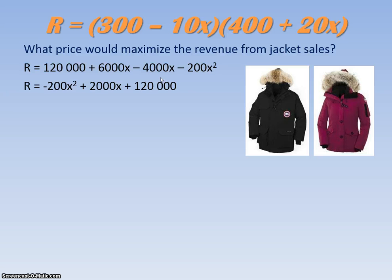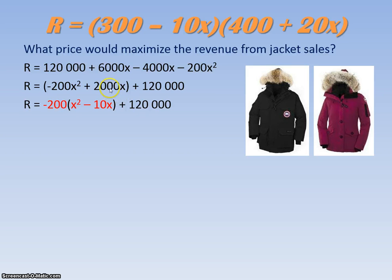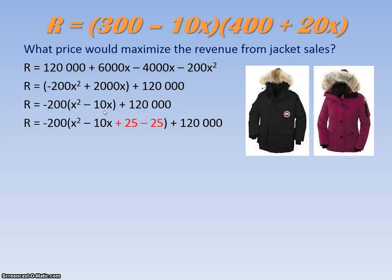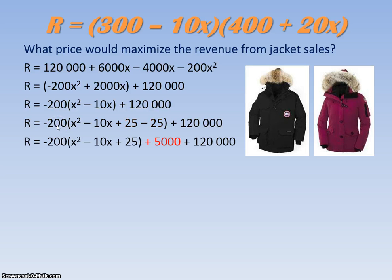Now we complete the square. We put brackets around the X terms — I don't want the negative 200 in front of X squared, so I factor it out, but it's going to affect the 2,000X term. Once 2,000 is divided by negative 200, I get negative 10X. The 120,000 stays on the outside. I take that negative 10, split it in half to get negative 5, and square it to get 25. I also add negative 25 to balance the equation. For the perfect square trinomial I only want those three terms, so negative 25 is kicked out and multiplied by 200, making it positive 5,000.